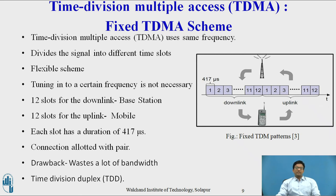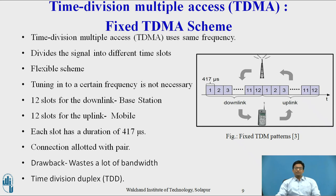The drawback of TDMA is wastage of bandwidth: if no input signal is present in one of the channels, since a fixed time slot is assigned to each channel, that time slot does not carry any information, resulting in bandwidth wastage. Using the same frequency, the receiver can stay at the same frequency for the hold time. A fixed TDMA pattern helps implement multiple access and a duplex channel between base station and mobile station, assigning different time slots for uplink and downlink using the same frequency — this is known as time division duplex.